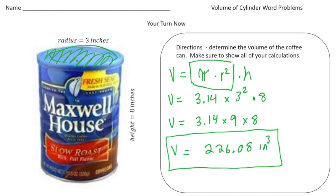So it's the area of the base and then times the height which is 8 inches, and when you do that you get 226.08 cubic inches, and there it is. All right, how'd you do?